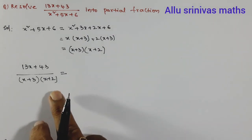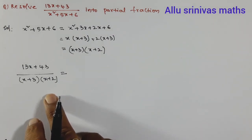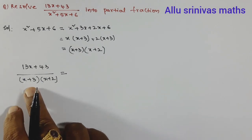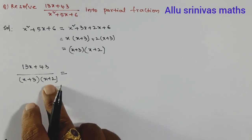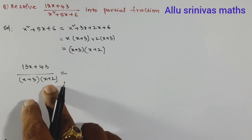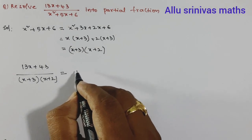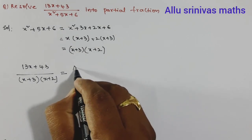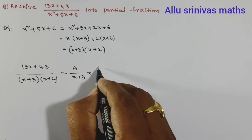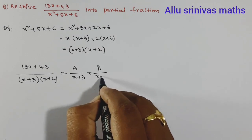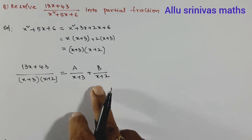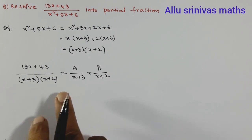Each linear irreducible factor gives one fraction. So the expression can be written as A divided by (x+3) plus B divided by (x+2). We need to determine these two values, and that will be the solution.